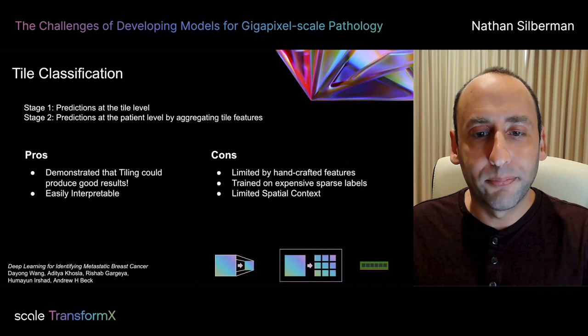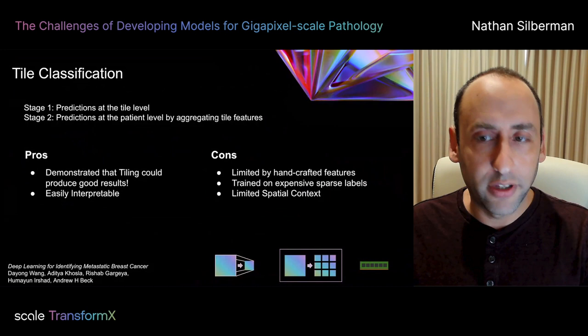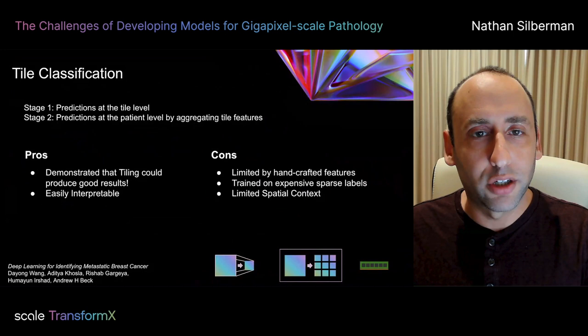And finally, depending on the tile size that we decide to choose, we may be limited in terms of the spatial context. So if we are using tiles of 250 by 250 pixels, for example, and it happens that the machine learning model needs to see something of a larger spatial context, then we're going to be limited in terms of model performance.